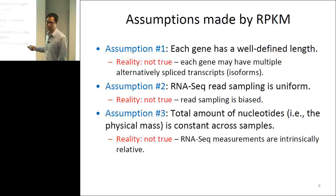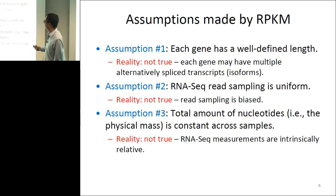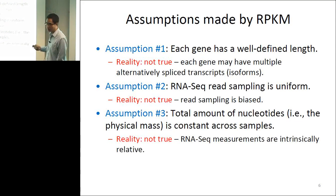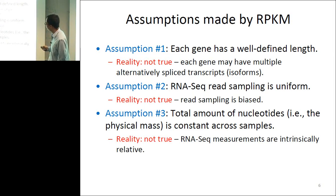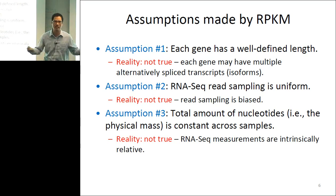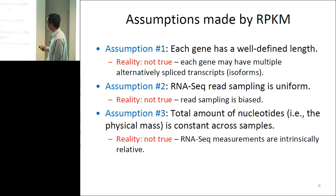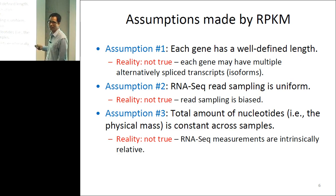If you think it through, the RPKM approach actually makes many assumptions. First, it assumes each gene has a well-defined length to divide by, but each gene has many alternative splice transcripts with different lengths. There are software approaches that try to decompose reads from a gene into different isoforms. Second, by dividing by gene length, you're assuming uniform sampling from every transcript at every position — close to true but not exactly, given 3-prime bias and other non-uniformities. Third, if you directly use RPKM for cross-sample comparison without additional normalization, you're assuming the total amount of nucleotides is constant across samples.